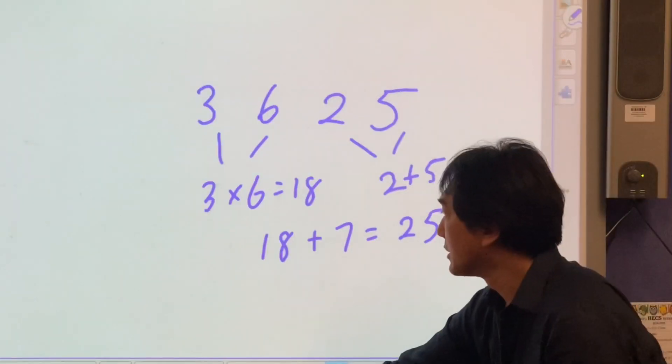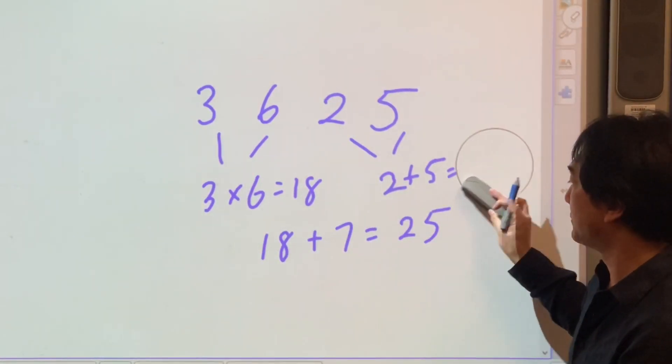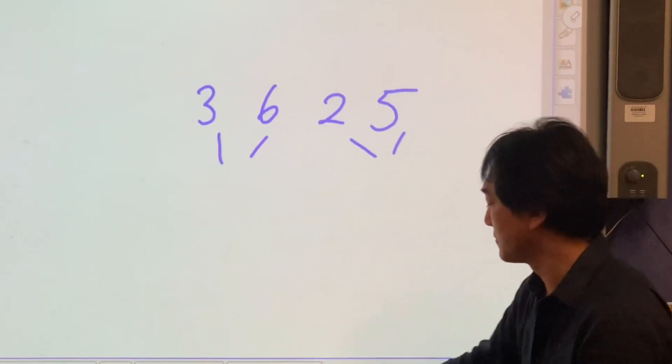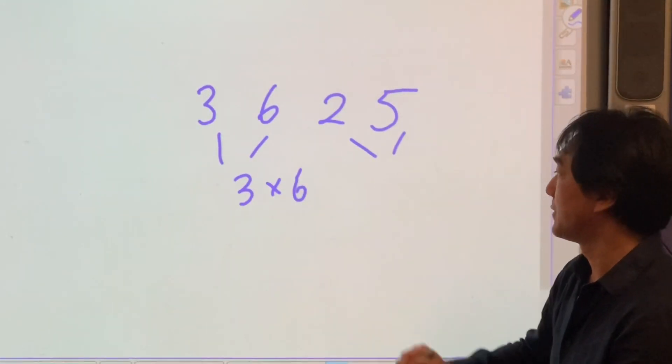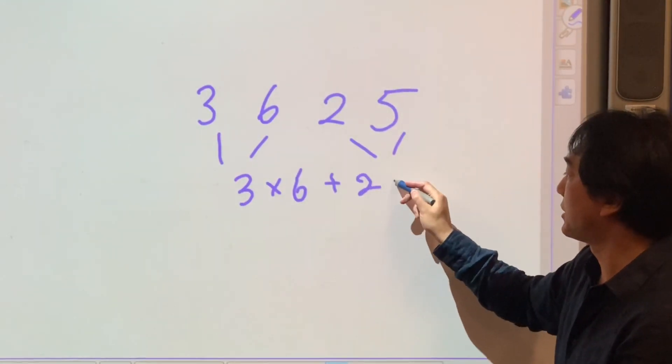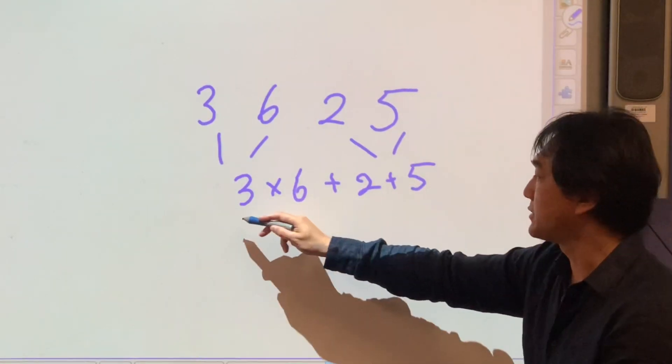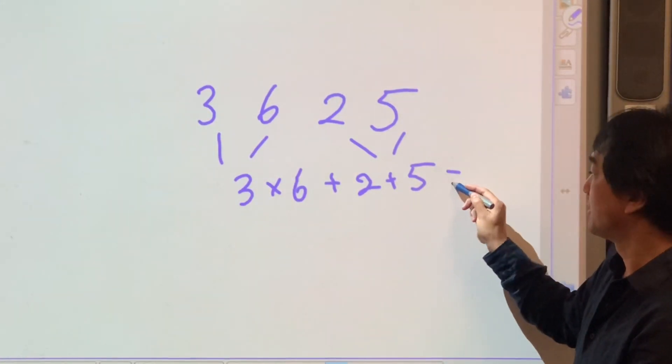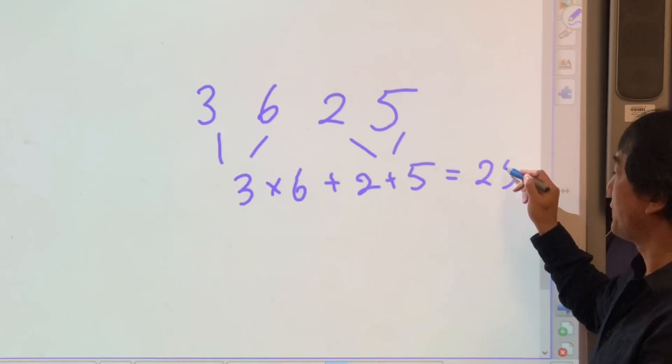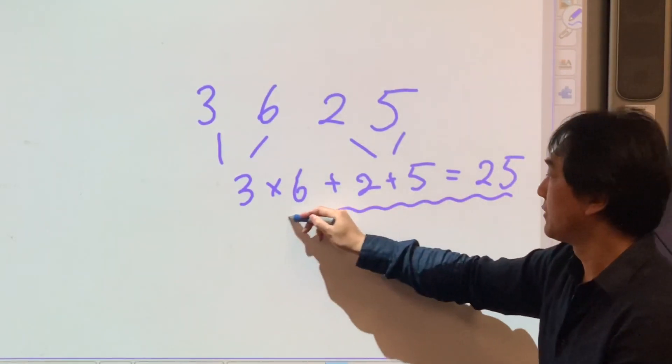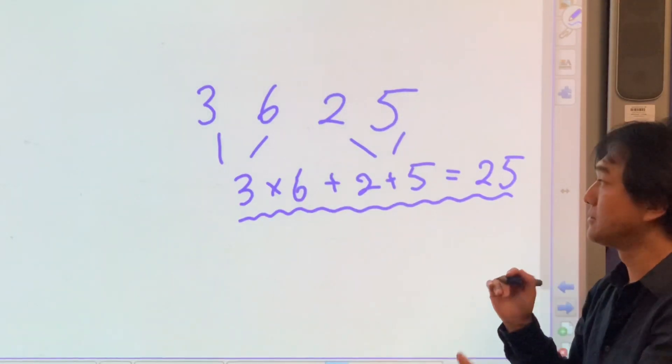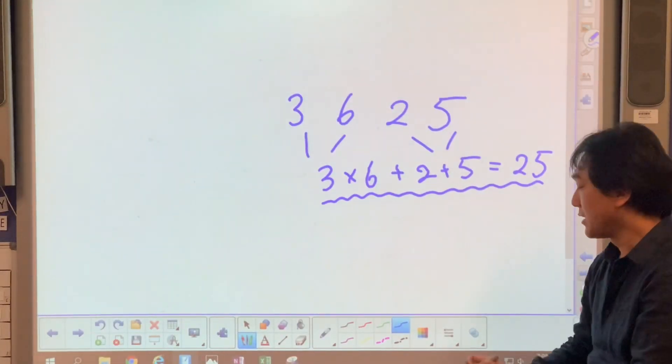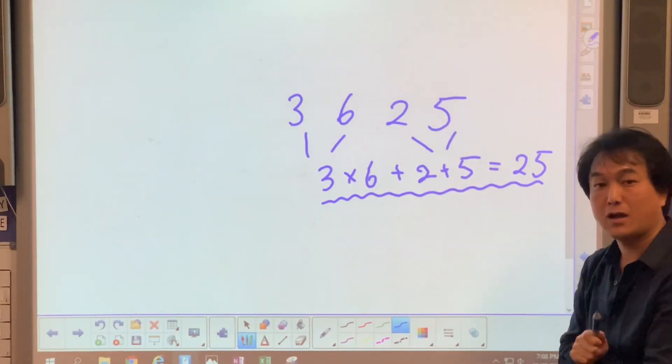So instead of having like this, three times six plus two plus five - that's eighteen plus seven, which is twenty-five. You have to have the whole thing in one equation or one number sentence. Does that make sense? If you want to make this even harder...